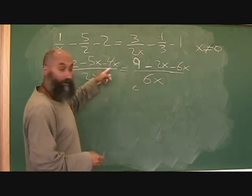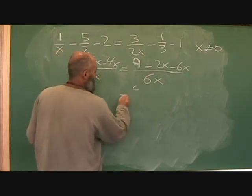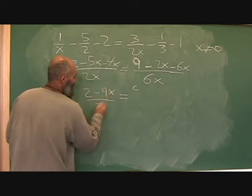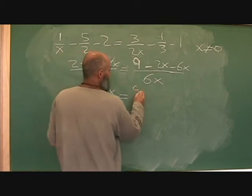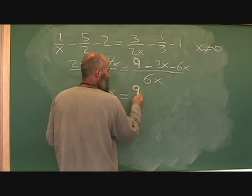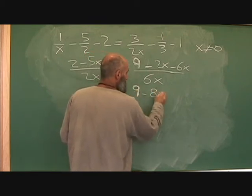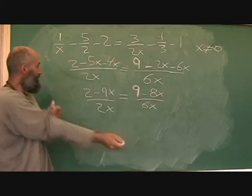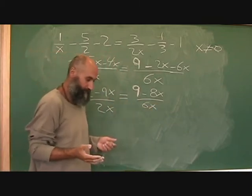So what you're going to do is combine your like terms. So line up your equal sign. So 2 minus 9x over 2x. 9 minus 8x over 6x.